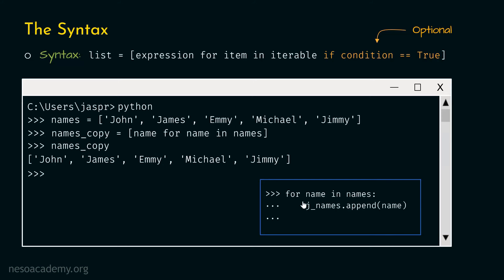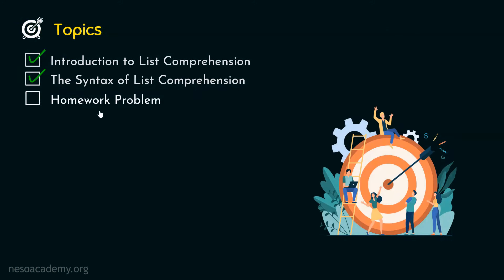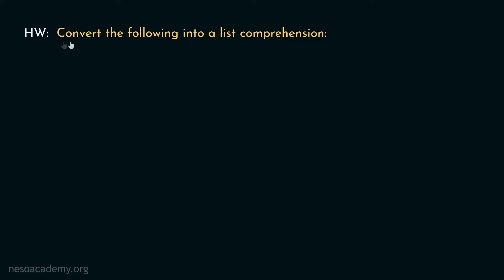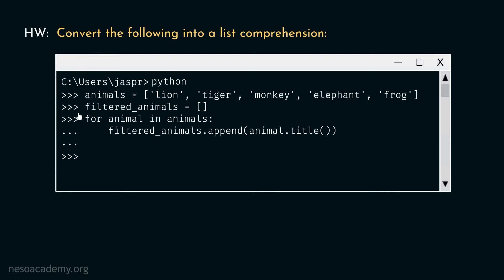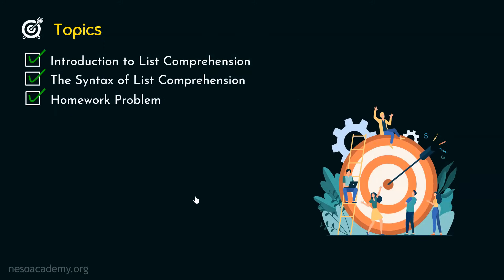We don't need a for loop for this purpose. List comprehension provides a shorter syntax to create a new list based on an existing list. With this we are done with the topic. The homework problem is: convert the following for loop into a list comprehension. Take your time and try to convert it. That's it for this lecture — thank you for watching and I will see you in the next one.